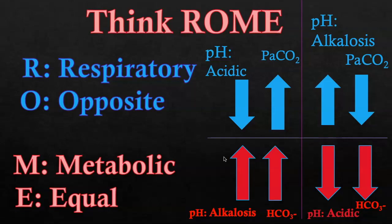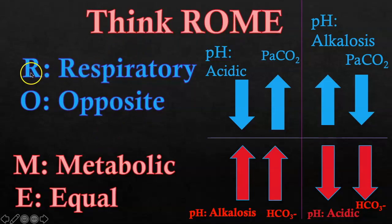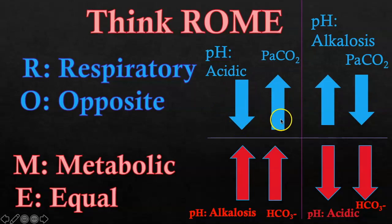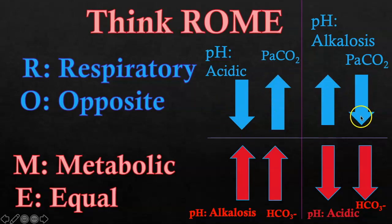That being said, you want to think of the acronym ROME. When it's respiratory in nature, the arrows will be facing in the opposite direction. So if the pH is on the low end of the spectrum it's acidic; CO2 will be high because when CO2 is broken down to carbonic acid it is very acidic. Now if you have low acid levels then your pH is going to go high.